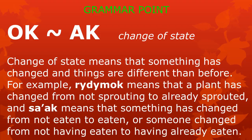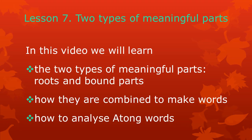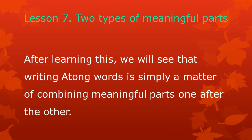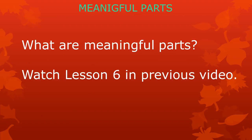Now let's start Lesson 7. In this lesson, we will continue learning about meaningful parts and we will see that there are two major types: roots and bound parts. We will learn how they are used to make words. After learning this, you will see that writing Atong words is simply a matter of combining meaningful parts one after the other. If you don't know what meaningful parts are, I suggest you watch Lesson 6 first.